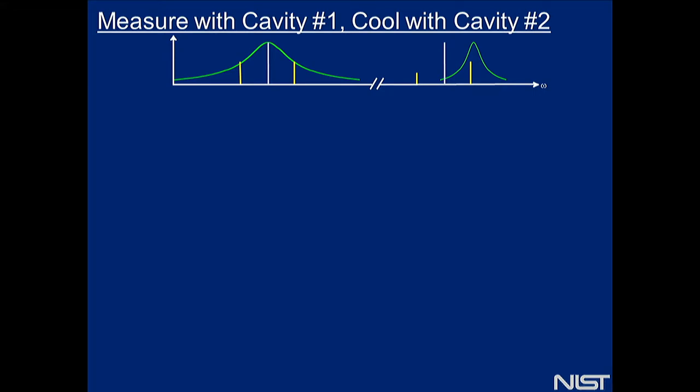Now that we have two cavities, we can use our upper cavity — which is in the good cavity limit — as our cooling cavity, applying a red-detuned drive so the upper sideband is on resonance and the Stokes process is negligible. With our readout cavity, which has a linewidth matched roughly to the mechanical sidebands, we drive exactly on resonance, and instead of homodyning we look at the heterodyne spectrum — the absolute power of the upper and lower sideband.